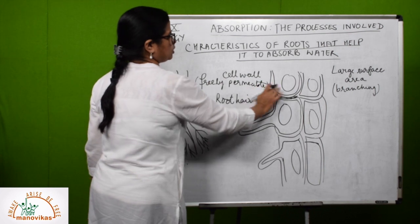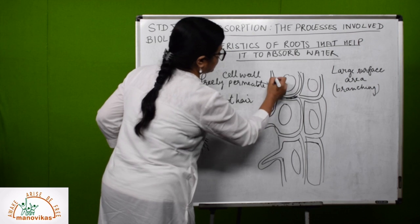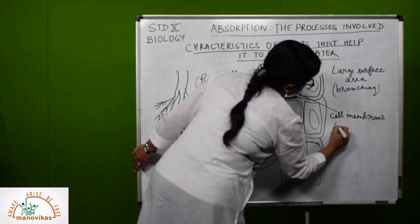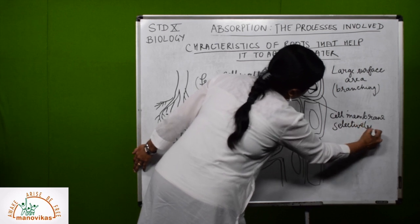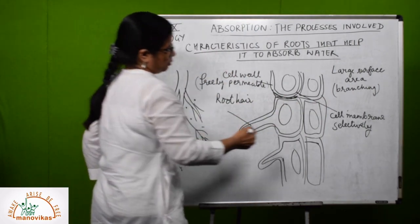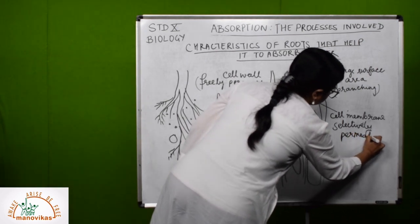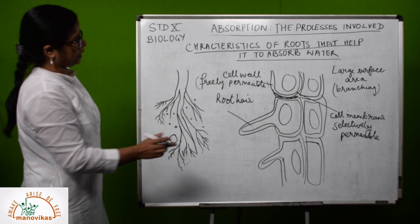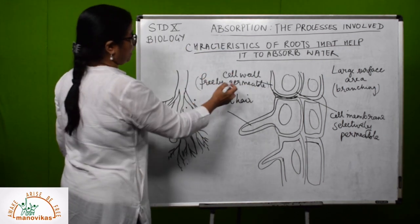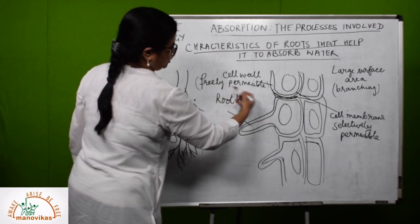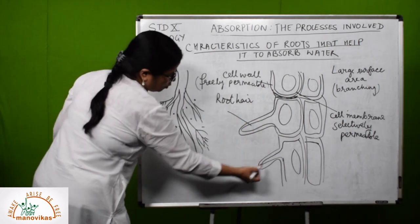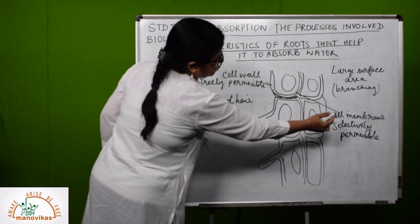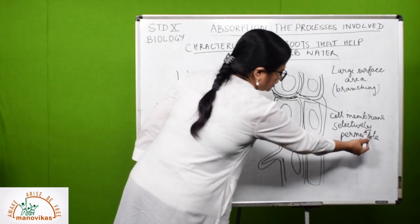The cell wall allows water along with minerals to move inside. Even the cell membrane — which is thin but selectively permeable — means that larger molecules cannot go inside but water can easily pass through. So these main features enable the root to perform absorption: the large surface area due to branching, the freely permeable cell wall allowing movement of water and other substances, root hairs extending and spreading far, and the selectively permeable cell membrane keeping larger particles out while allowing water in.